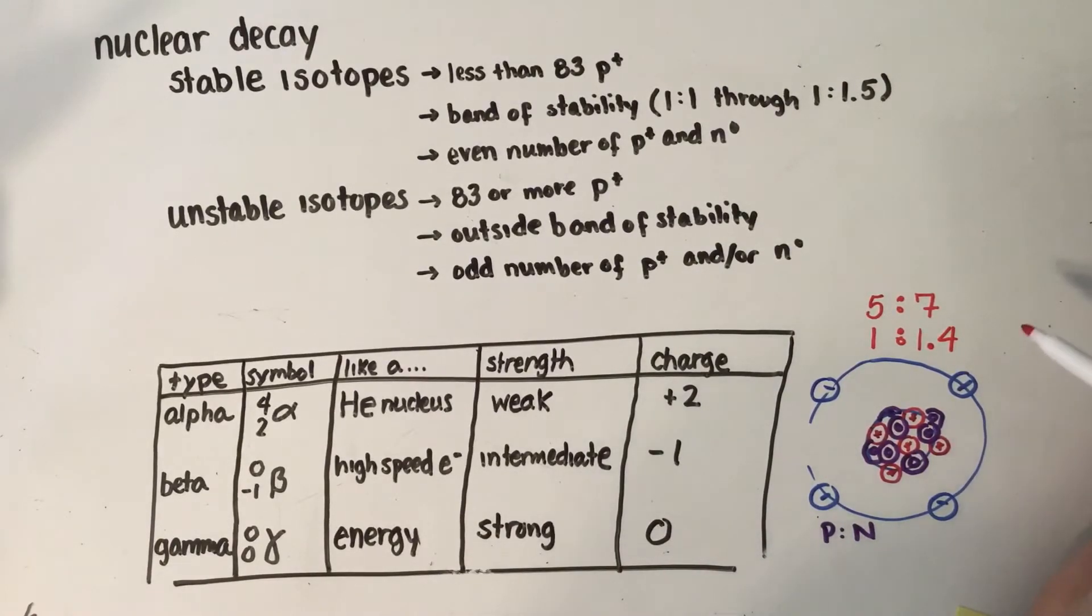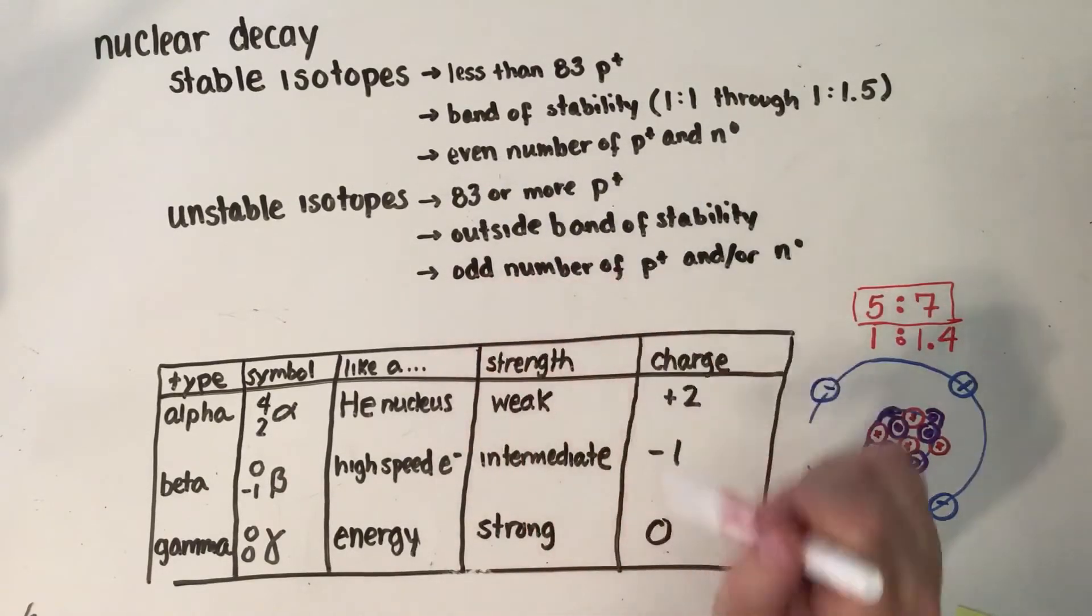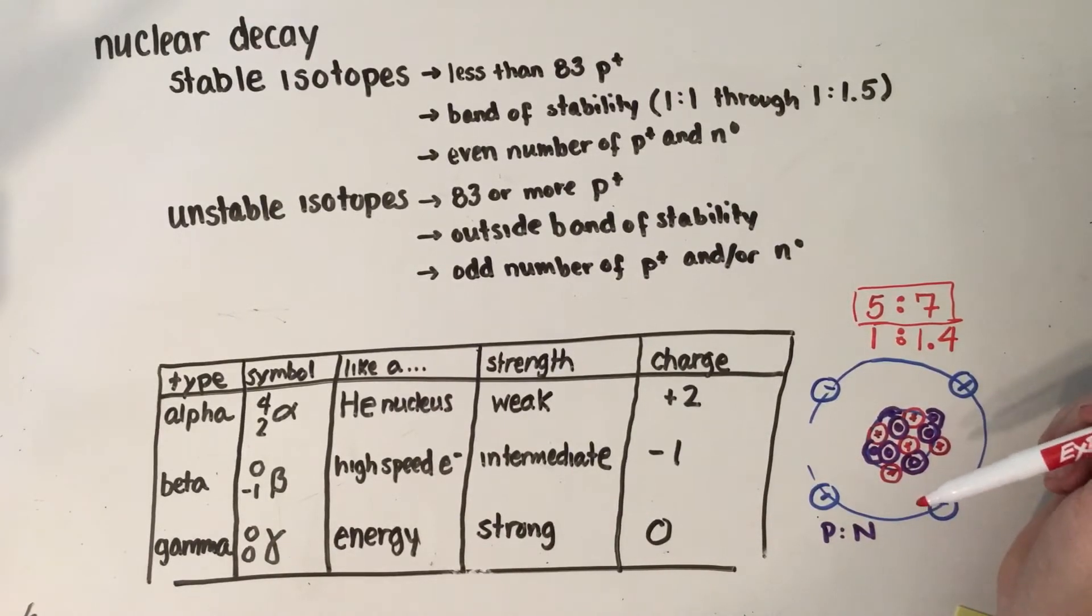The last thing we consider is whether the actual number of protons and neutrons is an odd number or an even number. Even tends to be more stable. So if you're comparing two isotopes and trying to figure out whether it's more stable than another, if you have one isotope that has an even number of protons and neutrons, then that's more likely to be stable. Here we had an odd number of each, 5 and 7. So this would be less stable than some of the other isotopes of boron, but it definitely is within our band of stability and has much less than 83 protons. So it is fairly likely to be stable.